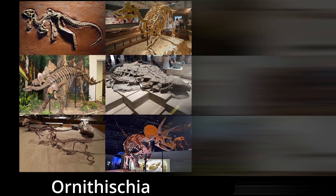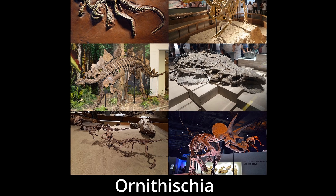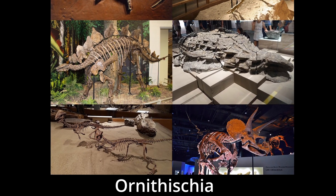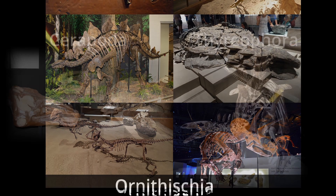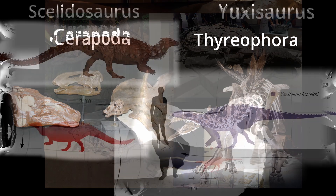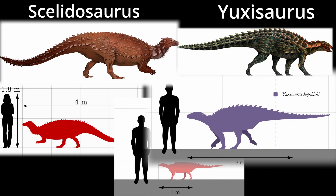The mostly herbivorous ornithischians can, for the most part, be split into the dominant subgroups Tyriophora and Seropoda, the latter of which contains both ornithopoda and marginocephalia. Basal Tyriophorans come to us in the early Jurassic with Skeledosaurus, Emosaurus, and Euxysaurus.